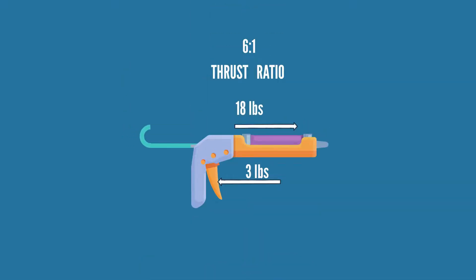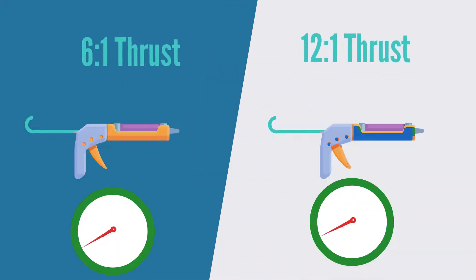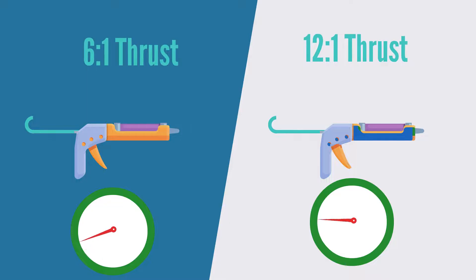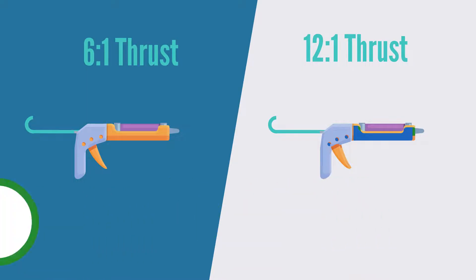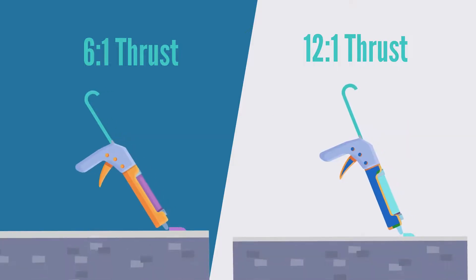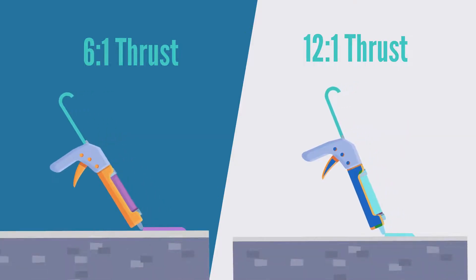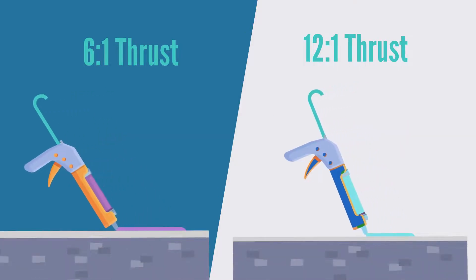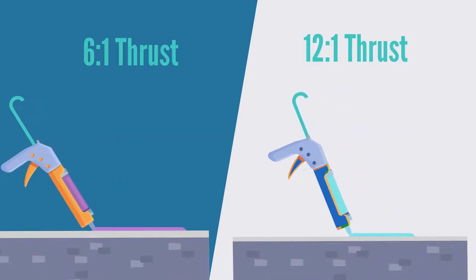And so on. The higher the thrust ratio, the stronger the drive mechanism and the easier it is to extrude the material. One thing to note, however, is that the higher the thrust ratio, the less material you extrude with each trigger pull.